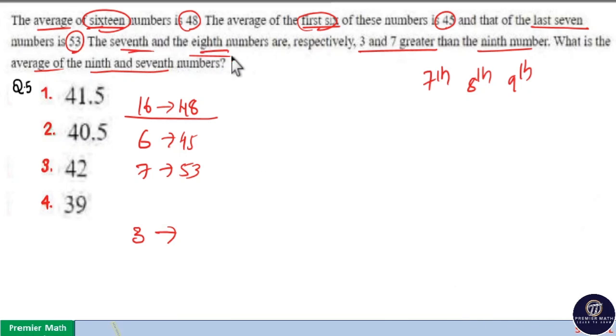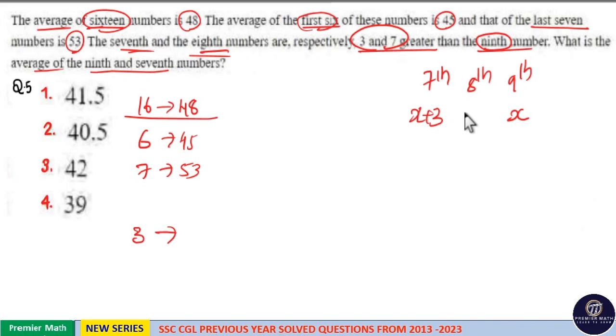Here 7th and 8th numbers are 3 and 7 greater than 9th number. Consider 9th number as x. Then 7th number is x plus 3 and 8th number is x plus 7. Now sum of these 3 numbers is equal to 3x plus 10.